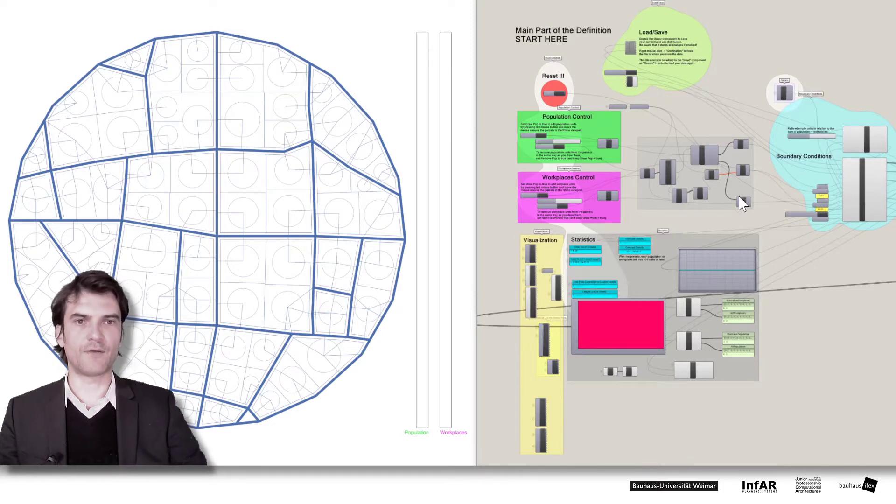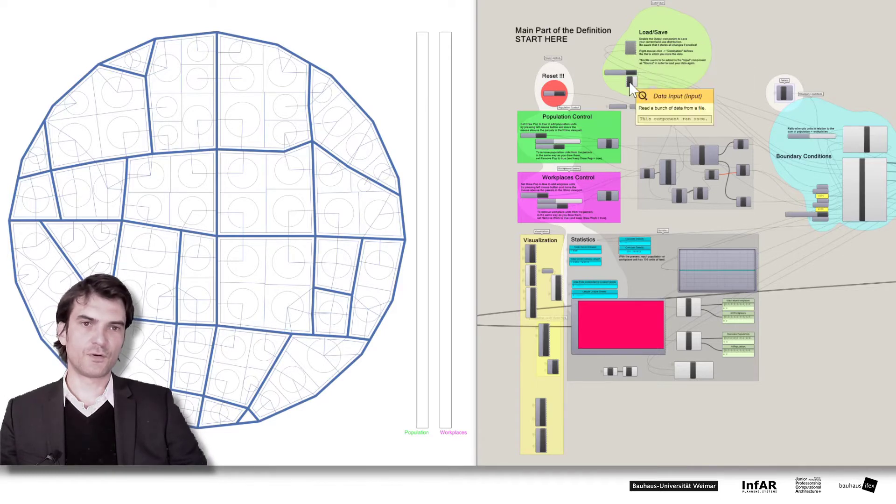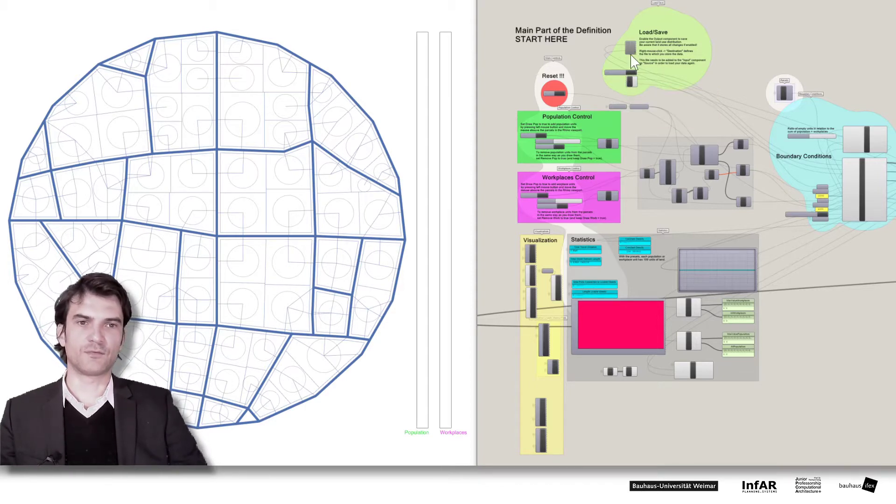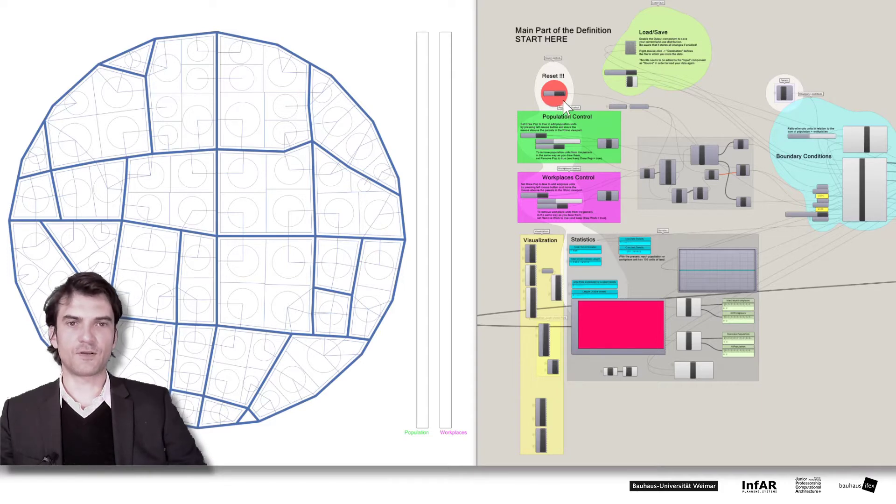So on the right side in the Grasshopper definition you see at the top a load save bubble. Here you have two components that allow you to save your land use pattern in case you want to use it for later and recall it and load it again. If you have drawn something and you want to delete everything there is the reset button. This starts from scratch as you see it here.